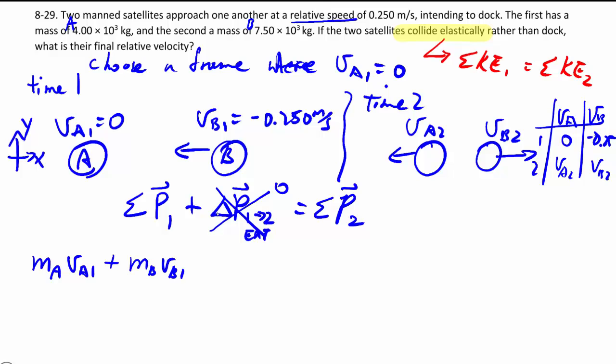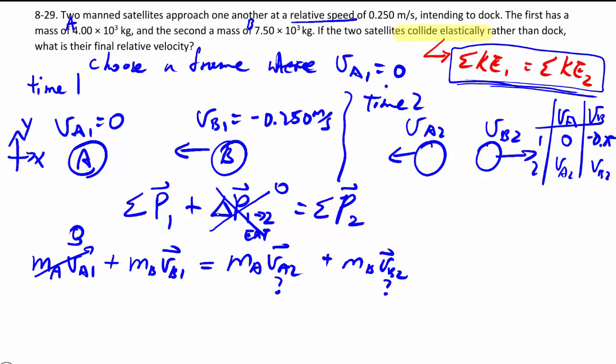Then we have MBVB1 that's equal to MAVA2 plus MBVB2. All vectors but one of these is zero as we have defined it. Unfortunately, we have no clue about these two things. So we have to actually go in and employ this relationship that relates beginning speed and ending speed to hopefully get another equation to solve for things.